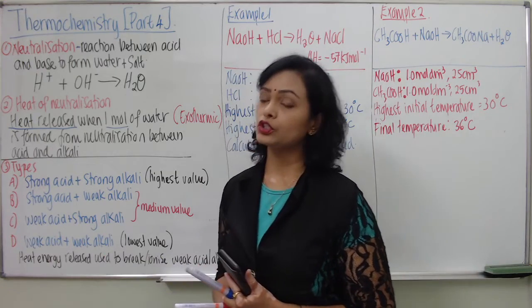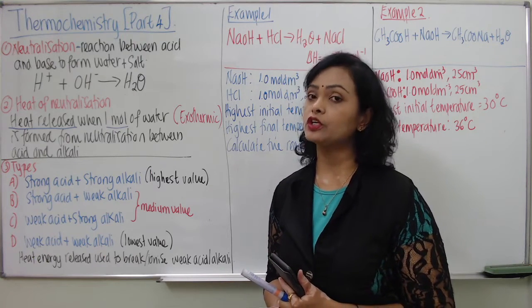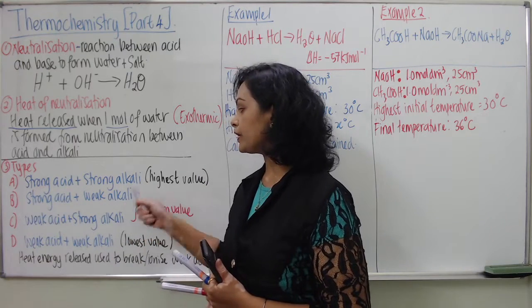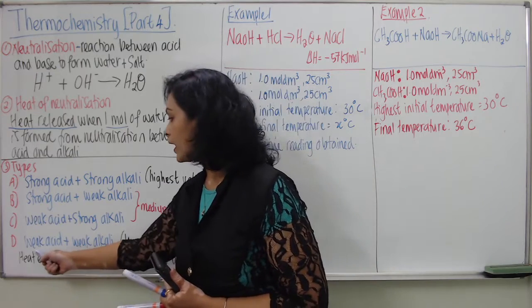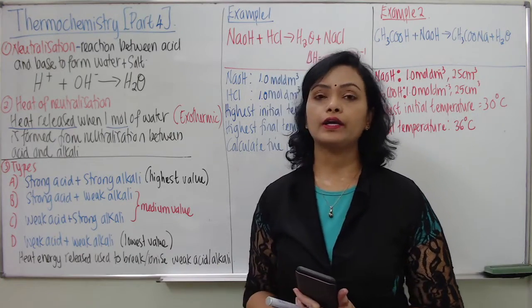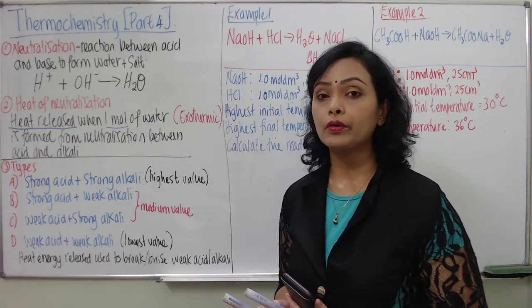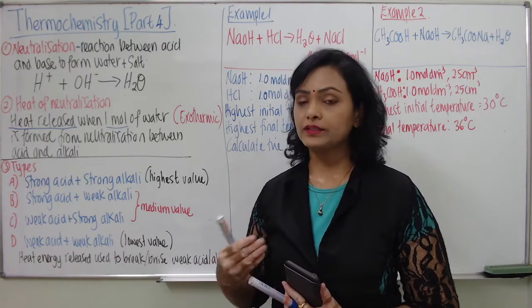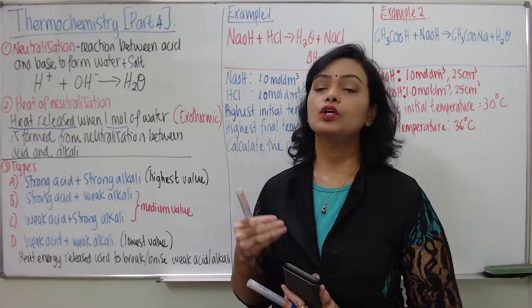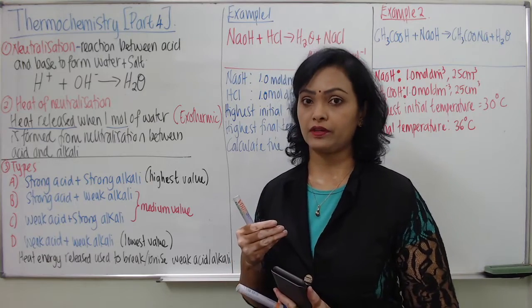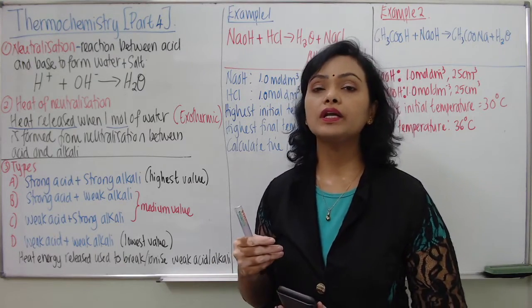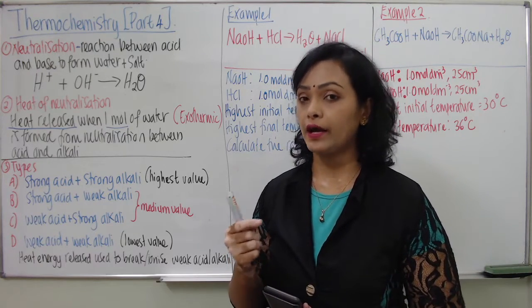Now let's go to types of combinations. We have four types of combinations for neutralization: strong acid and strong alkaline, strong acid and weak alkaline, weak acid and strong alkaline, and weak acid and weak alkaline. Strong acid and strong alkaline produce a high concentration of hydrogen and hydroxide ions — they fully ionize in water. Weak acid and weak alkaline ionize only partially, producing low concentrations of hydrogen and hydroxide ions respectively.